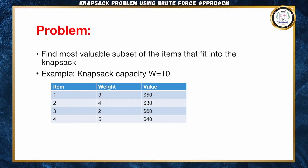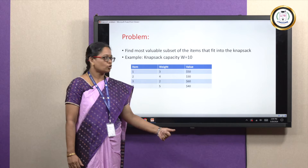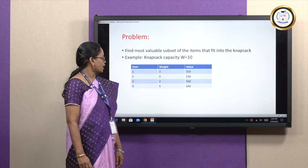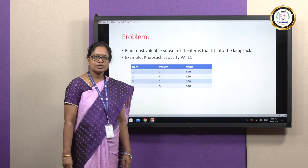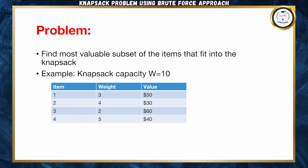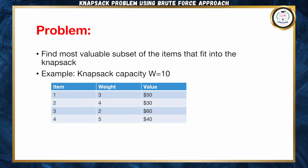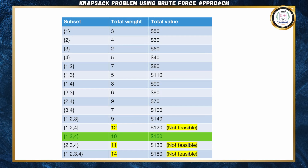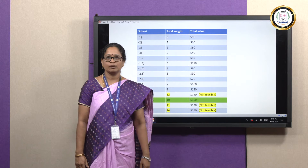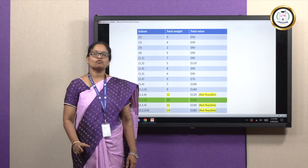Let us see an example problem. Here, 4 items are given and the corresponding weights and values are also given. The weight for item number 1 is 3 and the value is $50. The weight for item number 2 is 4 and the value is $30. The weight for item number 3 is 2 and the value is $60. The weight for item number 4 is 5 and the value is $40. The first step is to make a subset of all the items listed in the problem.